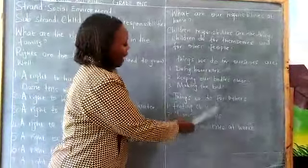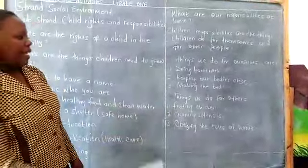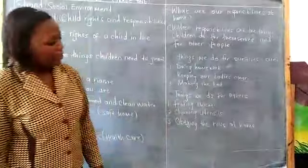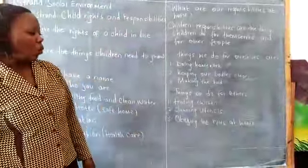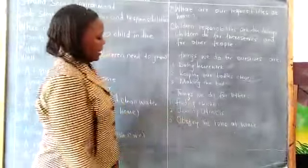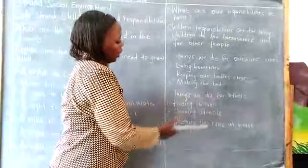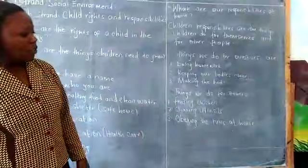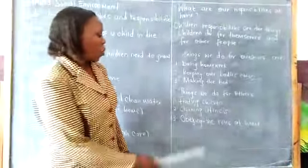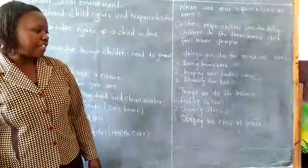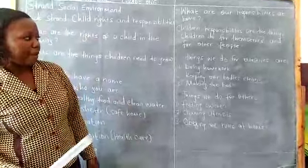Here we have the things we do for others — they are also responsibilities. When we have feeding chicken, those who have chickens at their home, it is their responsibility to feed them, to give them food and water. If we are told by our parents to clean utensils, it is a responsibility we are doing for our parents. Also, it is very good and also our responsibility to obey the rules at home. We have various rules at home and it is our responsibility to obey them.